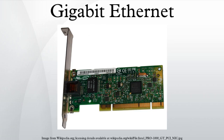In computer networking, Gigabit Ethernet is a term describing various technologies for transmitting Ethernet frames at a rate of a gigabit per second, as defined by the IEEE 802.3-2008 standard. It came into use beginning in 1999, gradually supplanting Fast Ethernet in wired local networks, where it performed considerably faster. The cables and equipment are very similar to previous standards and have been very common and economical since 2010. Half-duplex gigabit links connected through hubs are allowed by the specification, but the specification is not updated anymore and full-duplex usage with switches is used exclusively.